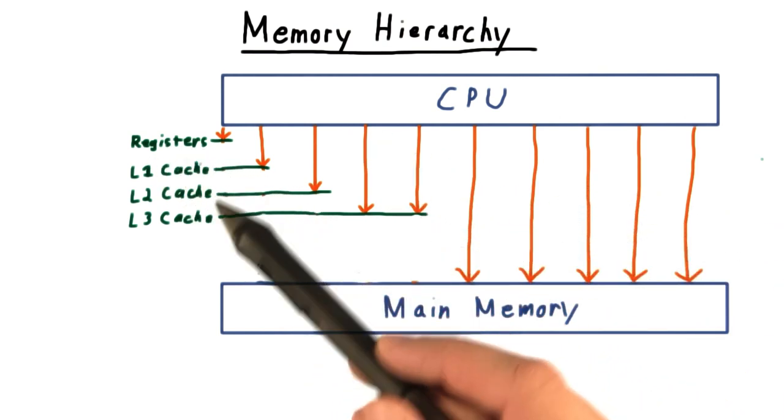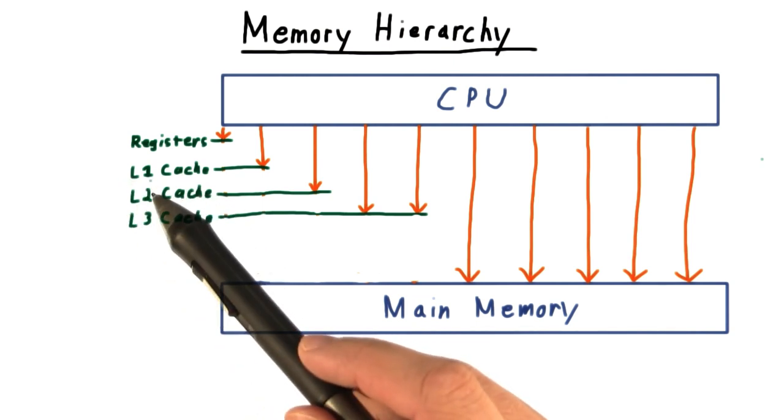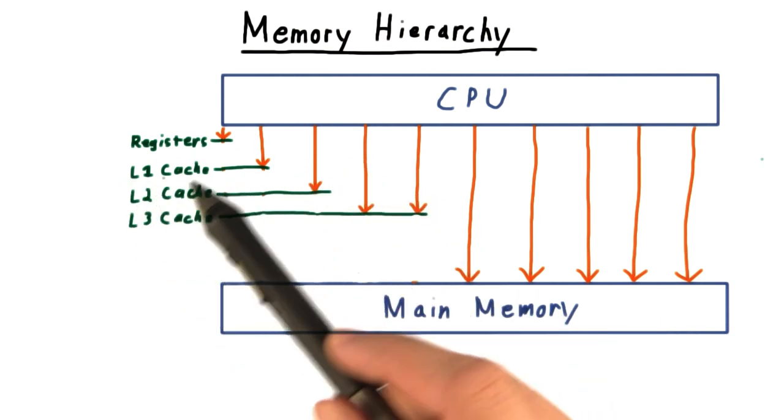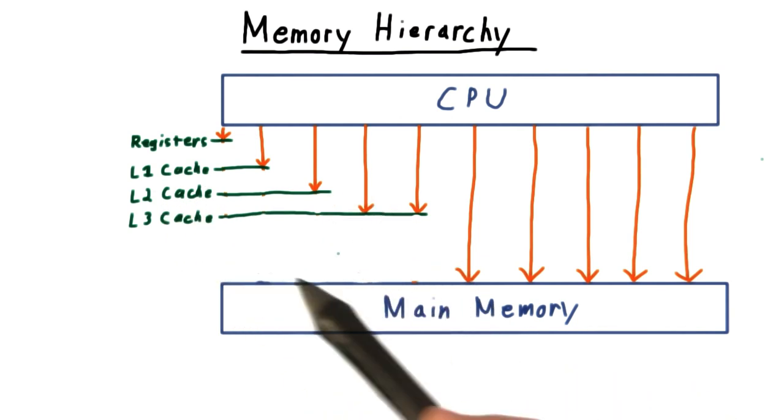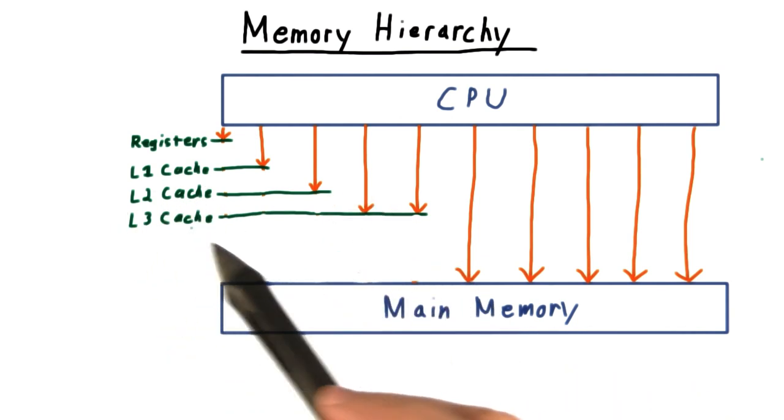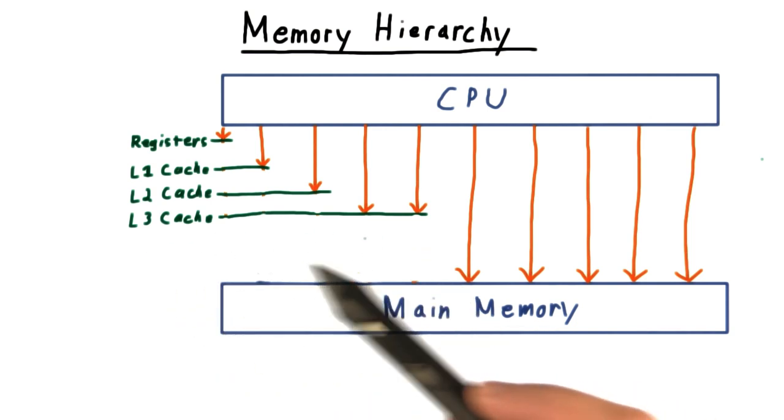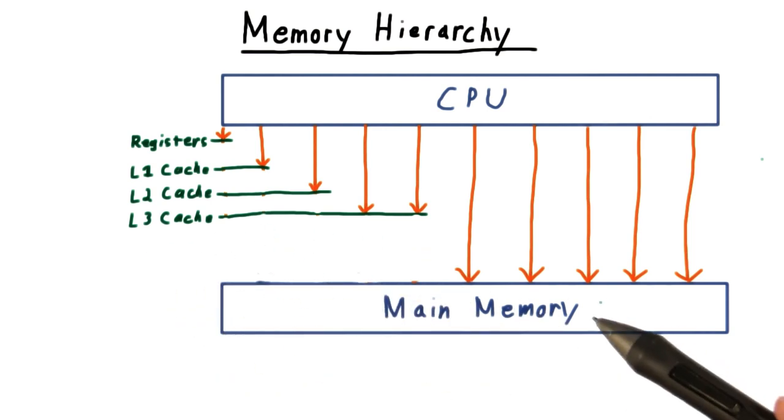What is not in the CPU registers, we look for in an L1 cache. What's not in an L1 cache, we look in the L2 cache. On multi-core processors, there might be even a third level of cache. What's not there, finally, we look for in main memory.